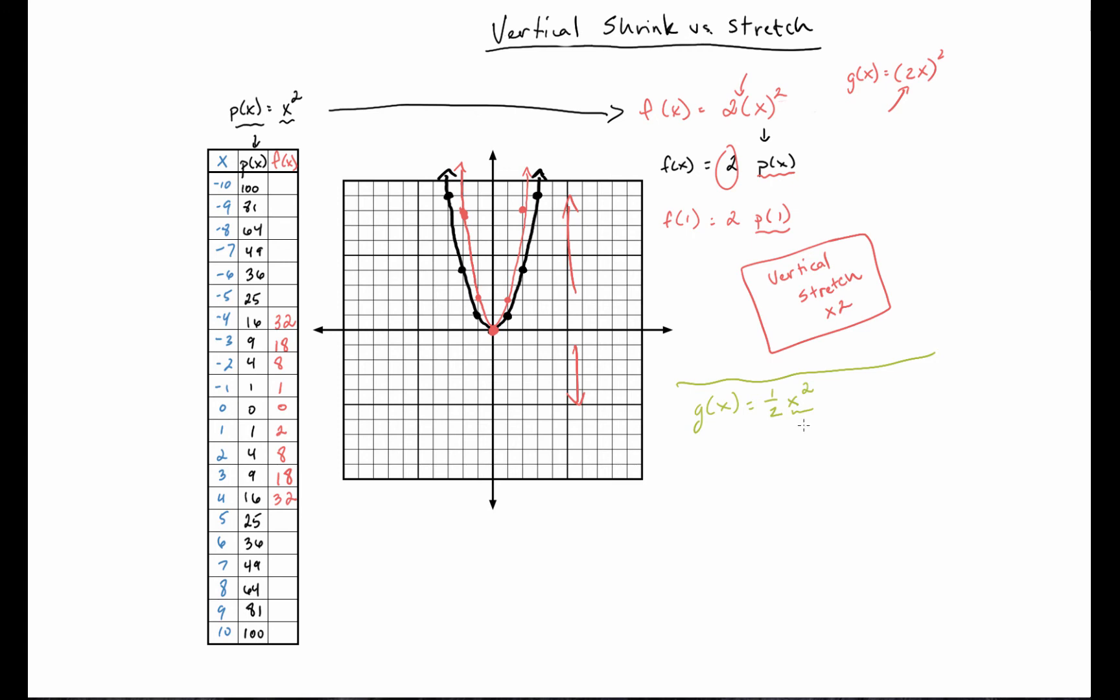So this is definitely still a vertical change. Okay, but what's going to happen in this case is we know that the x squared is just p of x. So whatever our normal output would be, we're just going to multiply that by one half.